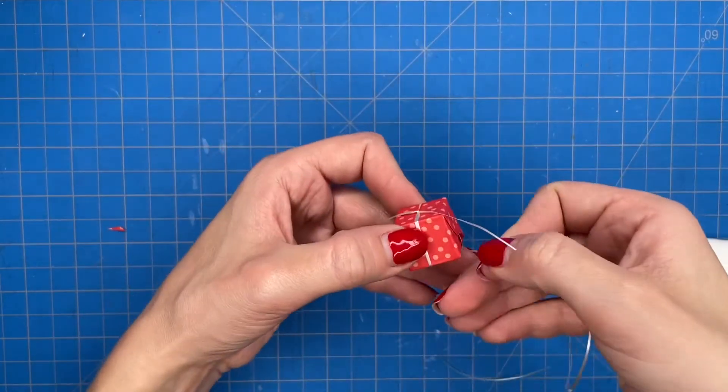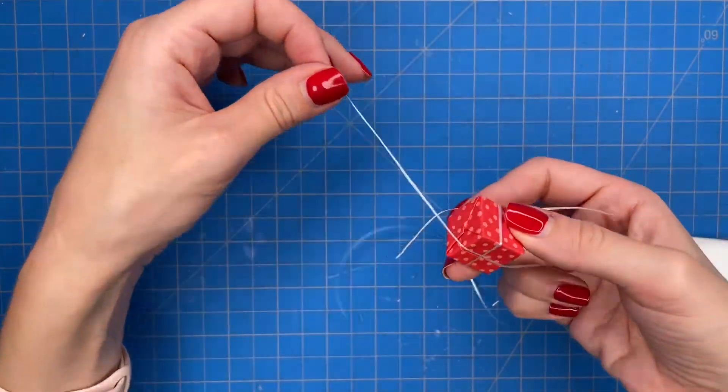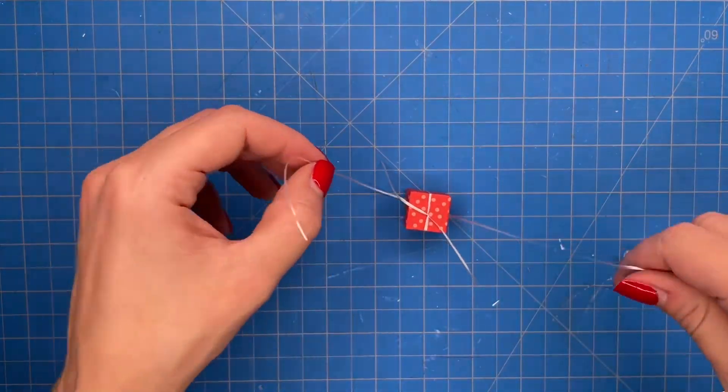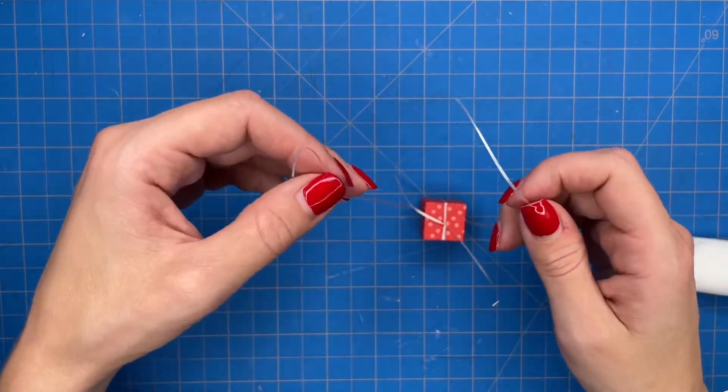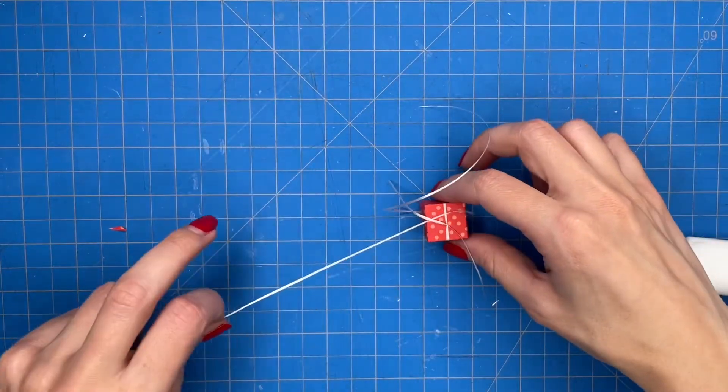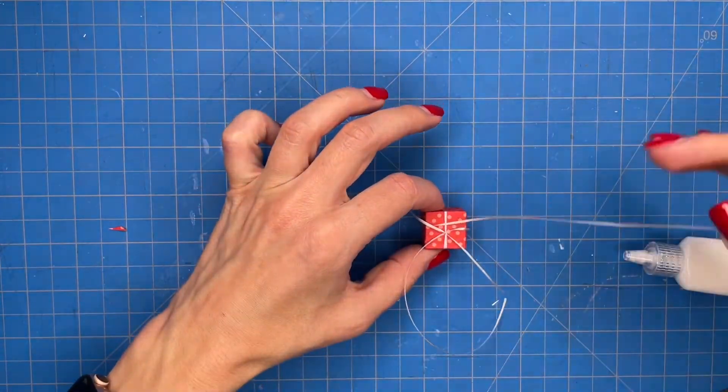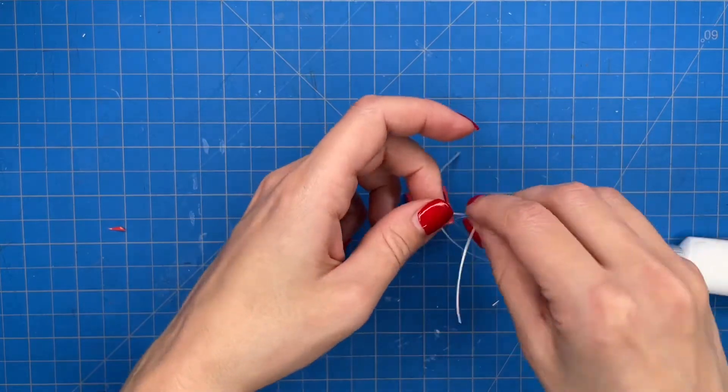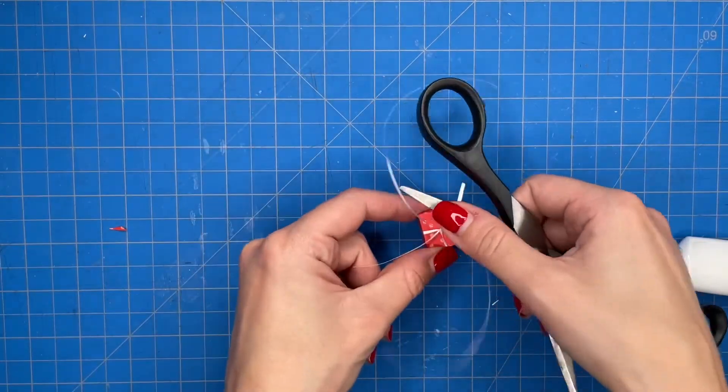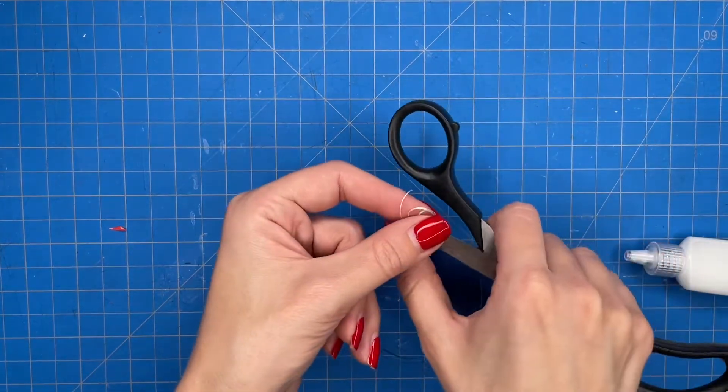I take another piece of ribbon and then wrap it around the side that does not have any ribbon on it yet. And then tie it also at the end. Using a pair of scissors I use the sharp end just to curl the ends of the ribbon.